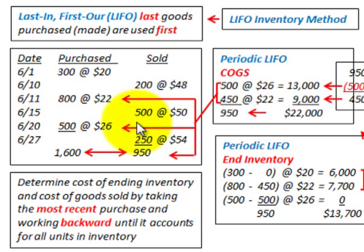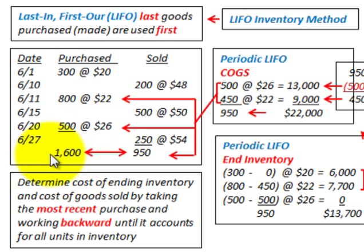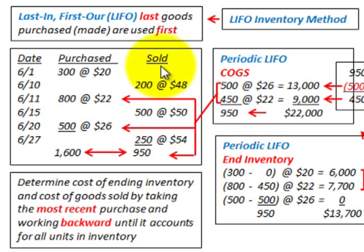Looking at our example, we have total sales of 200 plus 500 plus 250, giving us 950 units sold. Our total purchases were 300 plus 800 plus 500, giving us 1,600 units in inventory. These purchases represent our inventory, while the sold amounts represent our sales.